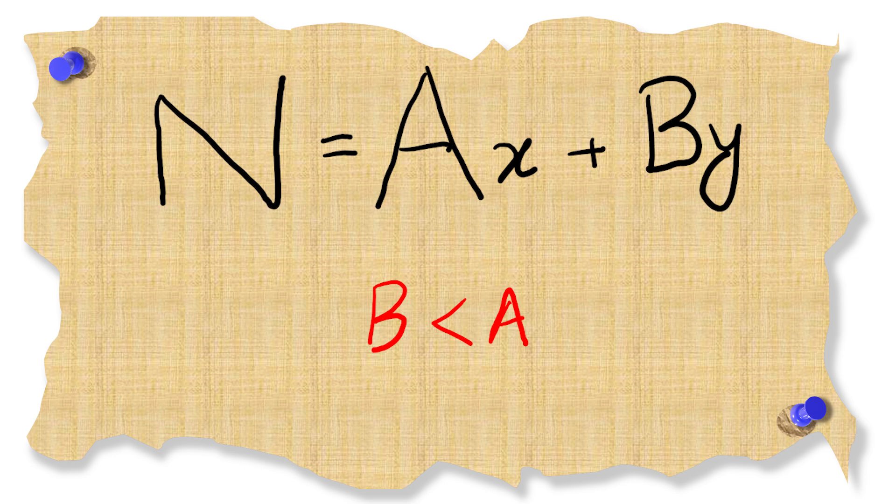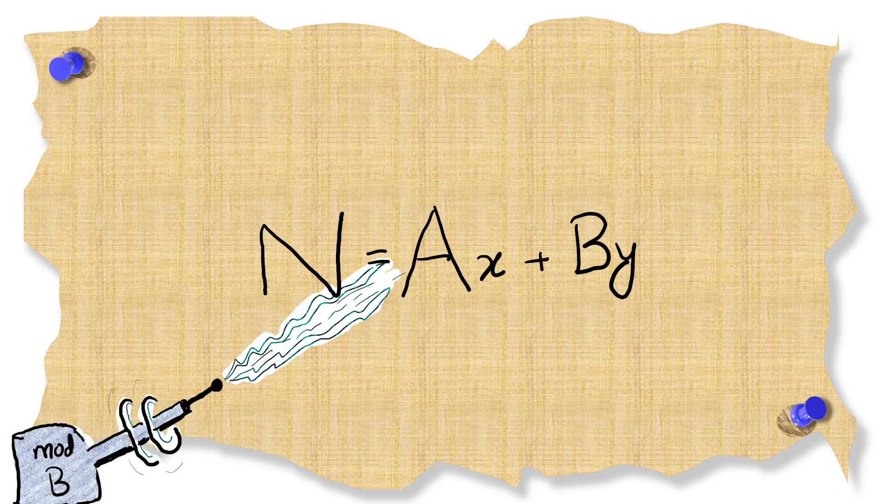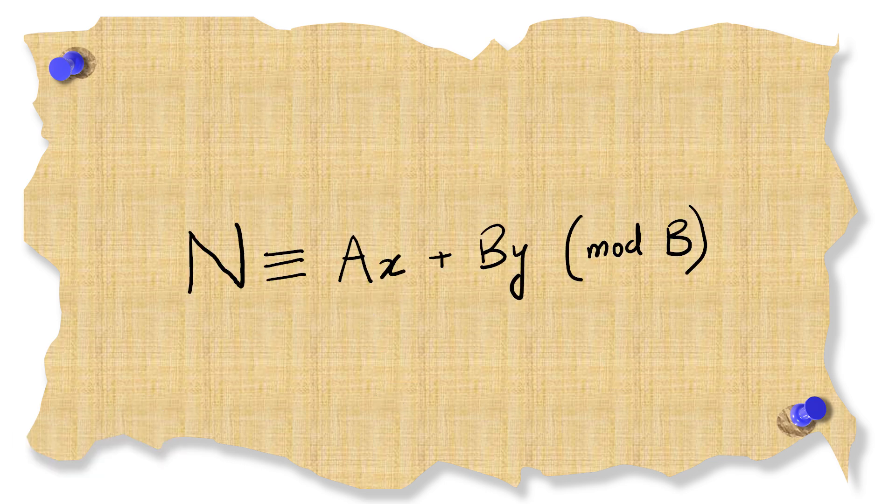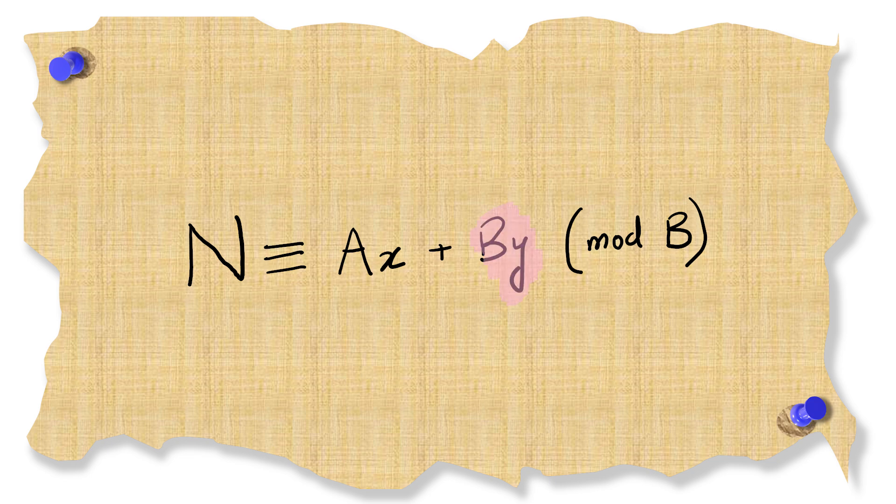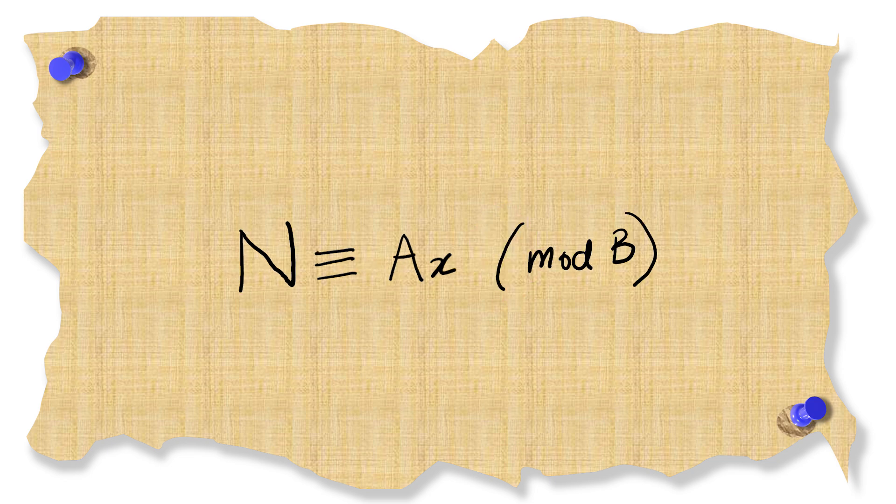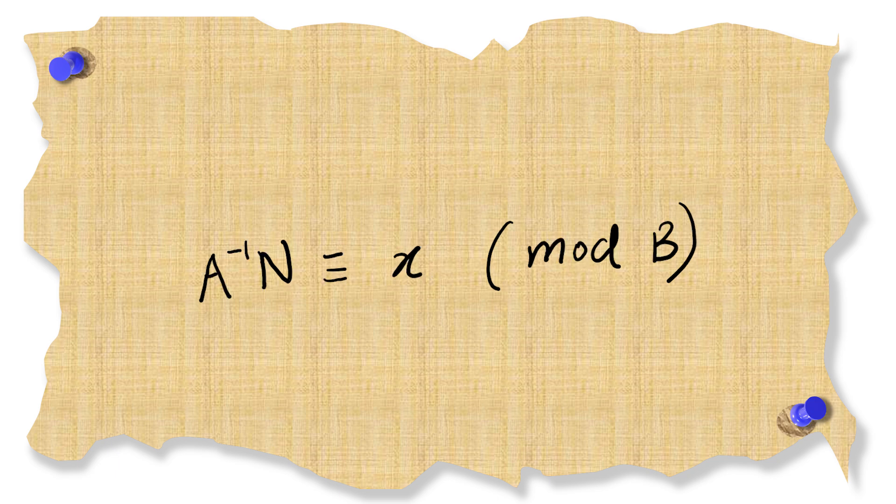To make matters simpler we'll assume B is smaller than A. We'll look at this equation and take it modulo B. B divided by B gives us a remainder of 0 so this term disappears. We know that A has an inverse and so we multiply that on both sides which gives us x congruent to A inverse times N modulo B.